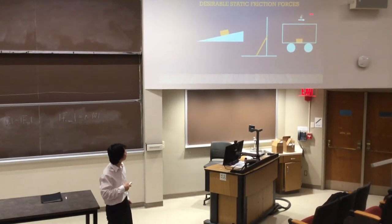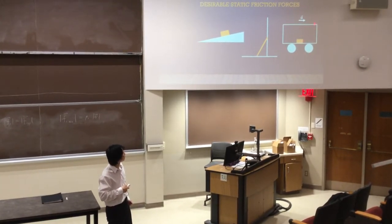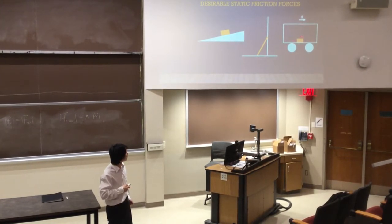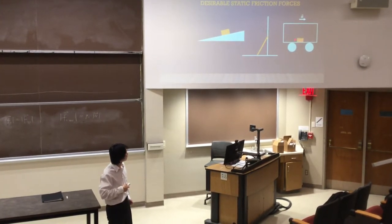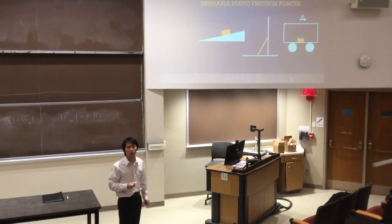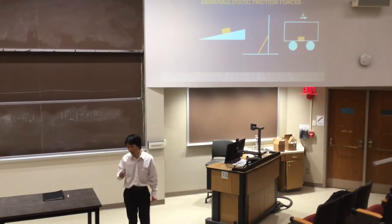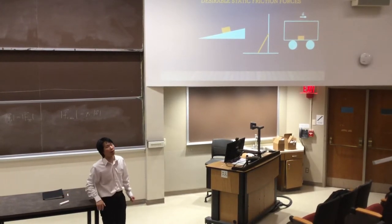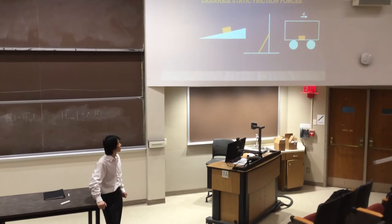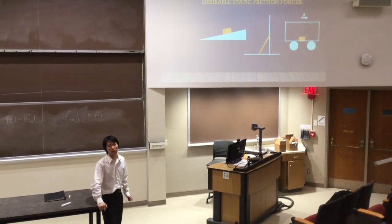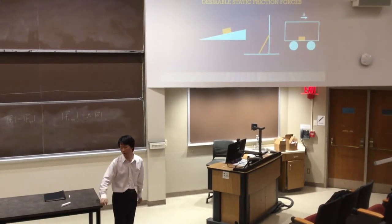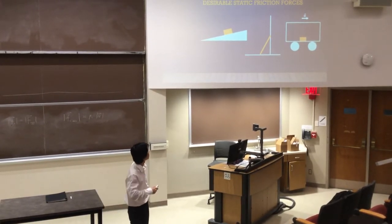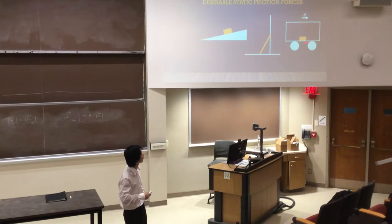In the last picture, suppose we have a bus which is accelerating, and there is a suitcase on the ground of the bus. If we don't want the suitcase to slide, the acceleration of the bus cannot exceed a certain value. This limit is decided by the coefficient of static friction between the suitcase and the ground of the bus.